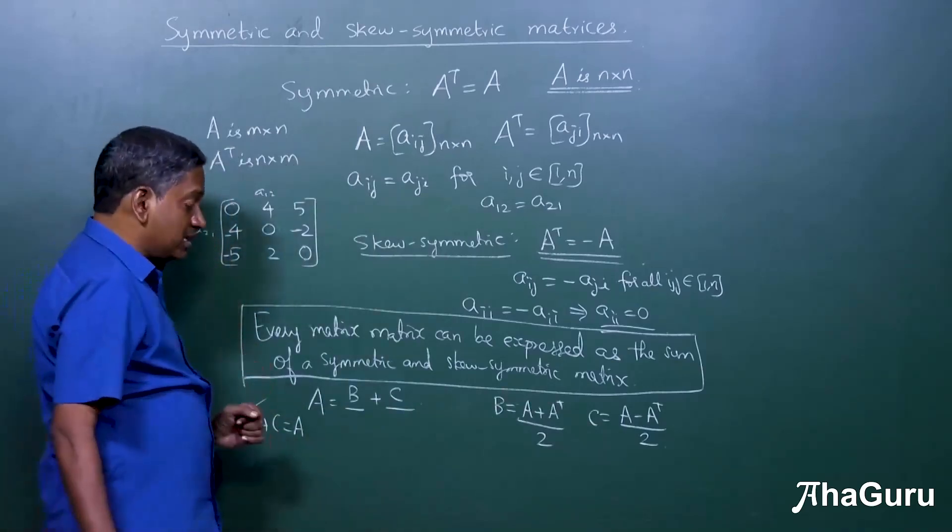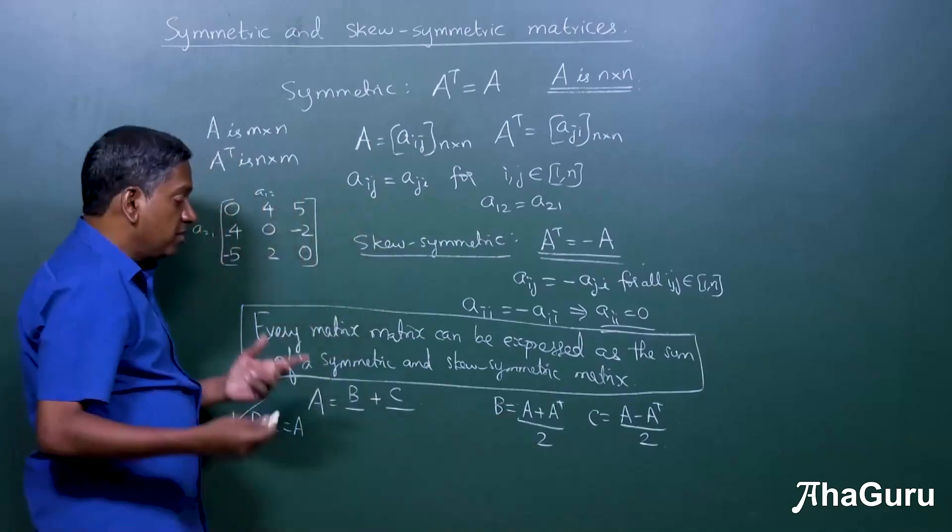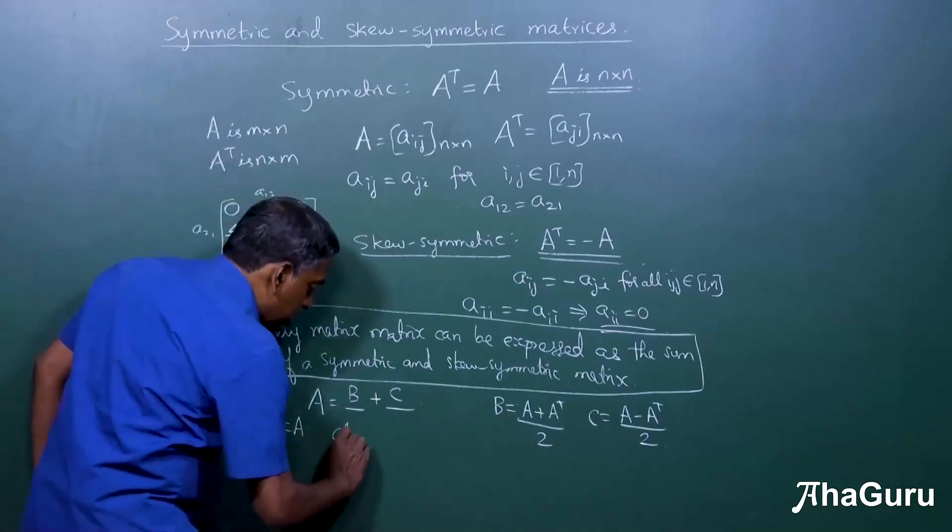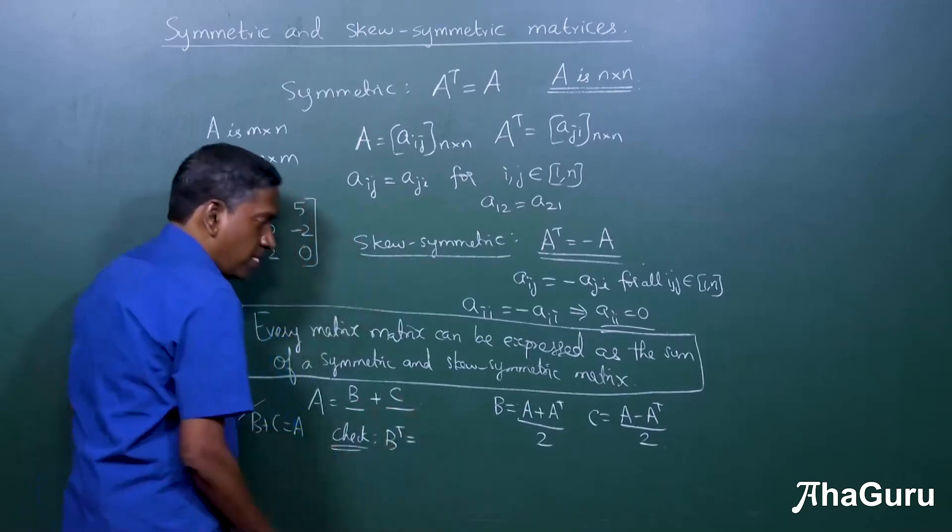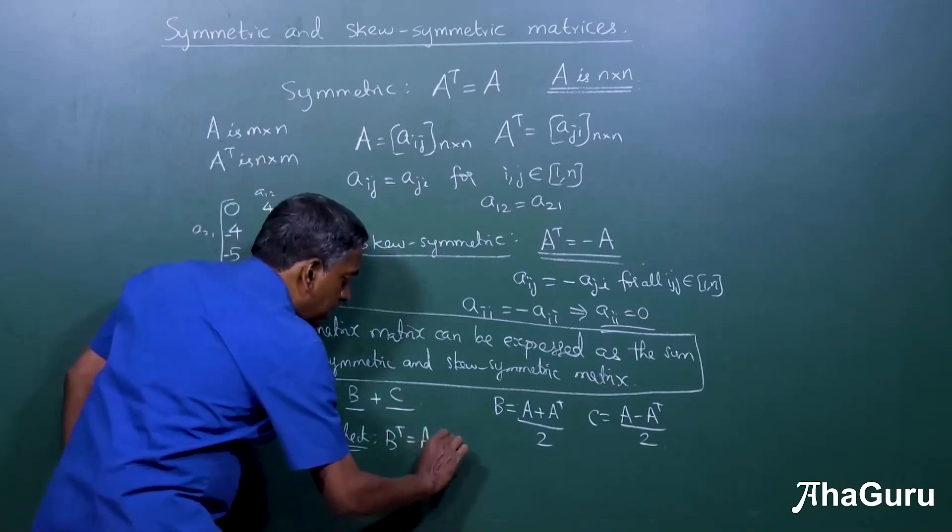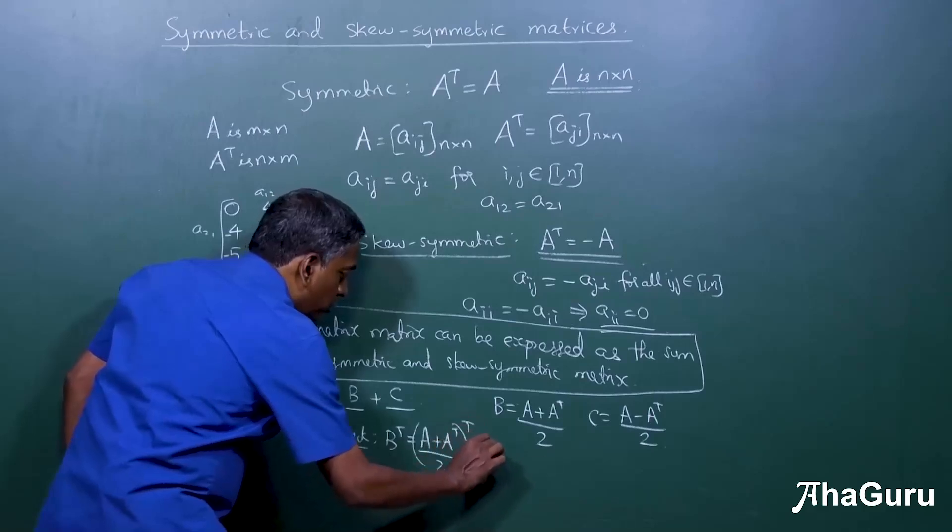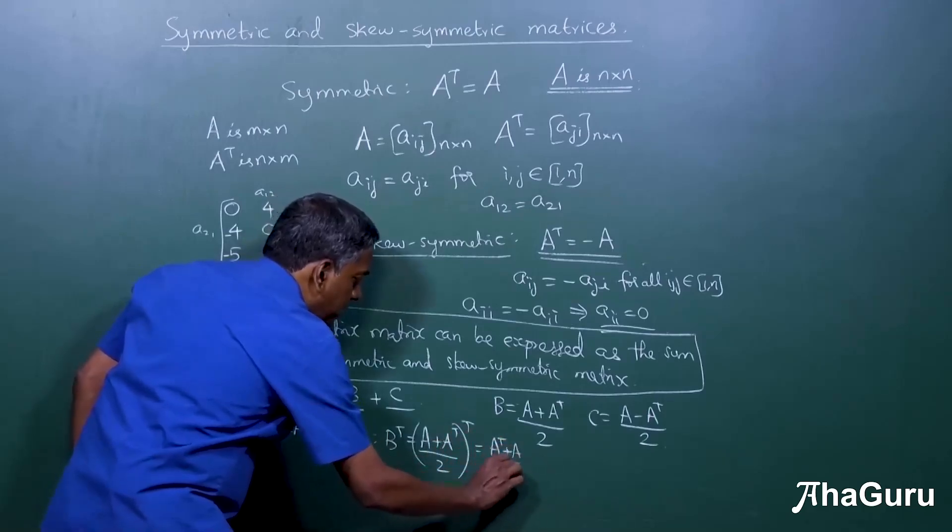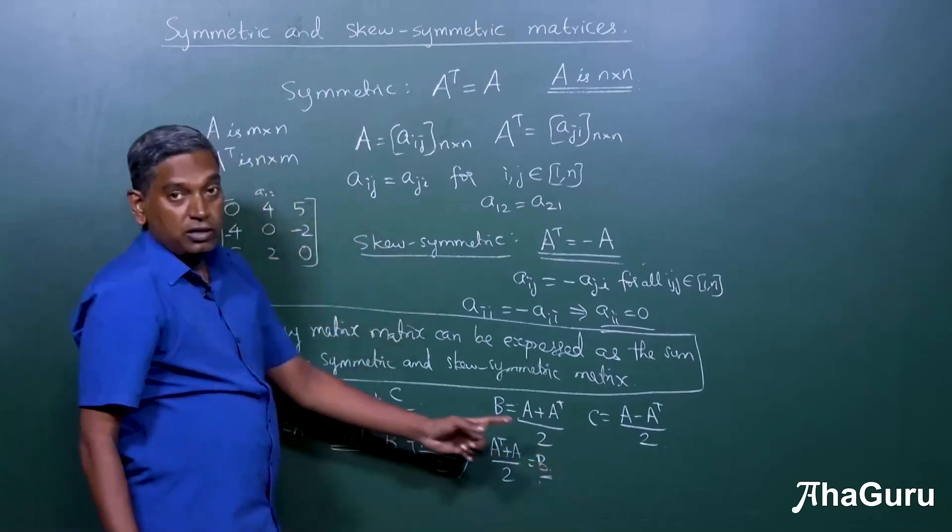But the big question is, is it true that B is symmetric and C is skew-symmetric? Well, let's check. B transpose is A plus A transpose by 2, the whole transpose, which is A transpose plus A by 2, which is the same as B.